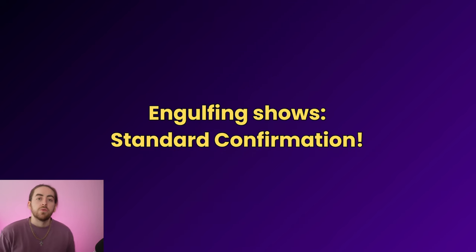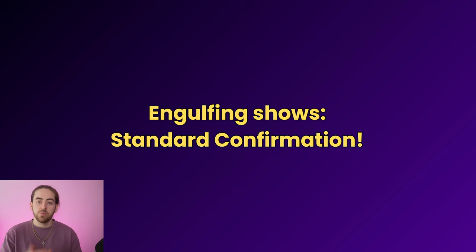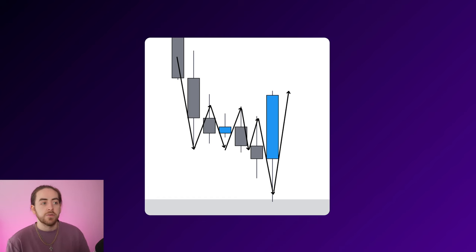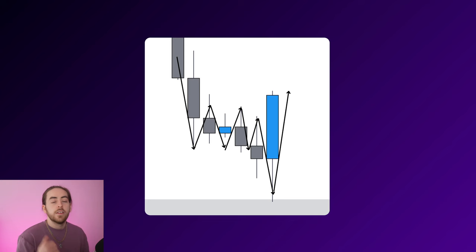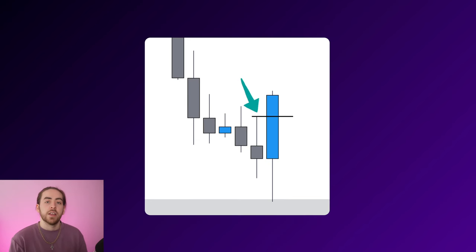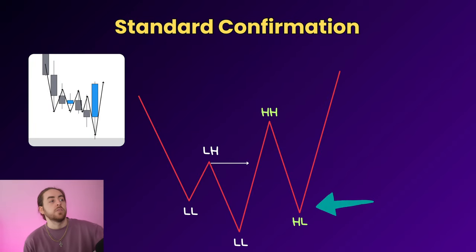The great thing about engulfing is that it doesn't show indication — it actually shows confirmation. The engulfing pattern is pretty much showing us the standard confirmation but in a concise zoomed-out way. On the chart, the downward phase of bearish candles shows the structural lower lows and lower highs, then we get a big push up that breaks structure confirming the change from bearish to bullish. Whereas pin bars only indicate reversals, engulfing patterns confirm them.